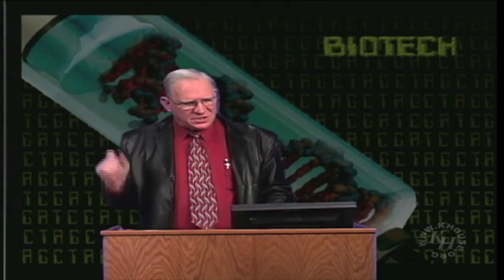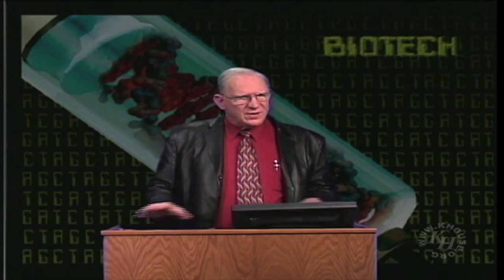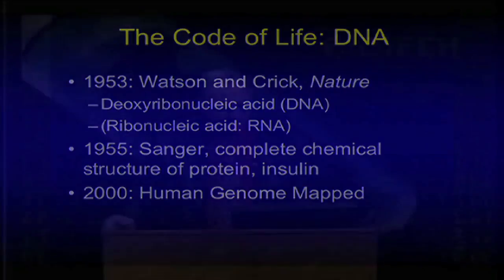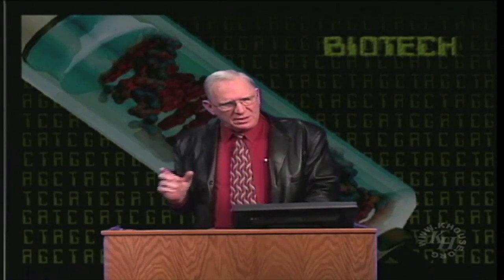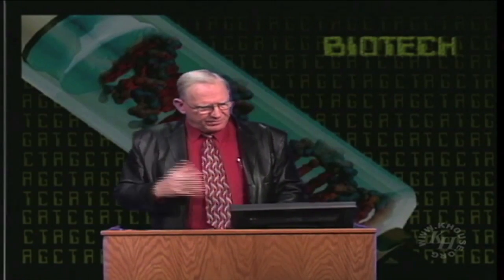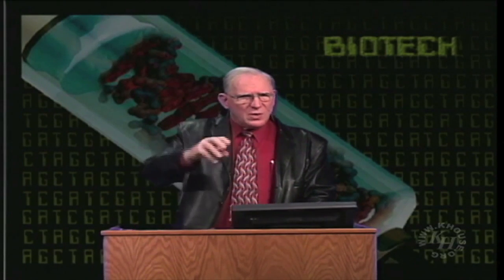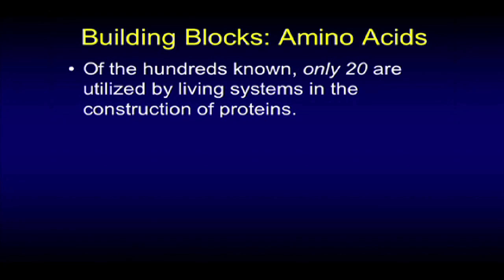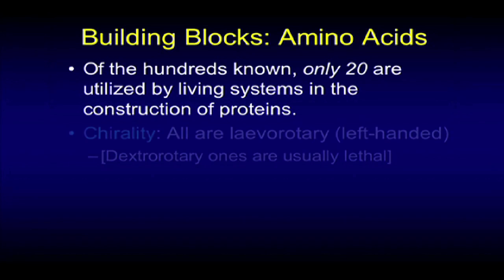The code that drives all this was deciphered by Watson and Crick in their famous landmark publication in Nature Magazine in 1953. And in recent years, the big move was to map the human genome. The basic building blocks are amino acids — the components from which proteins are made. Of the hundreds of amino acids that are known, only 20 are used by living systems in the construction of proteins.